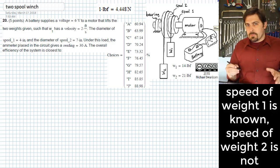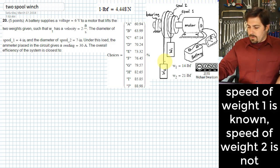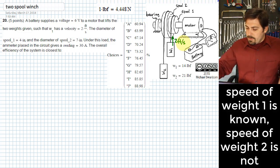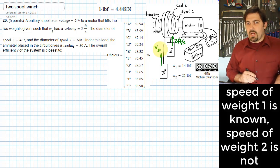The first place we need to start is realize that we do know the speed of weight one—that's this one going up at a specified speed of two feet per second. We don't know the speed of this other weight over here, so I'll call that V2. That's the first step of our problem: to figure out the speed of that other weight.